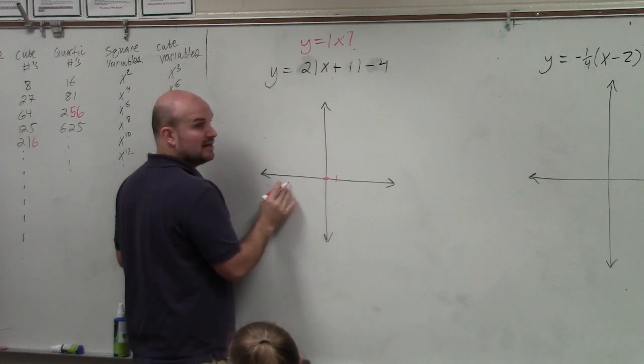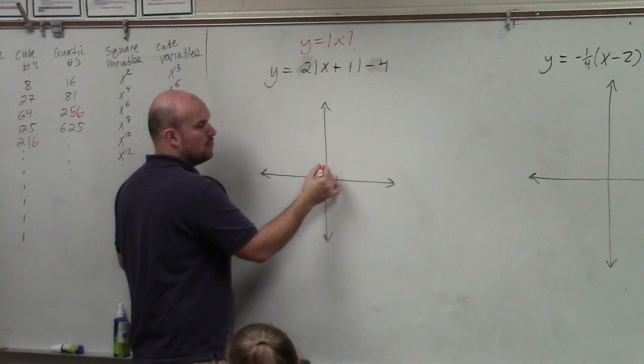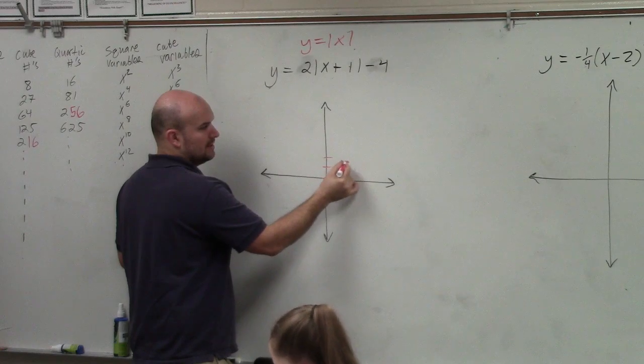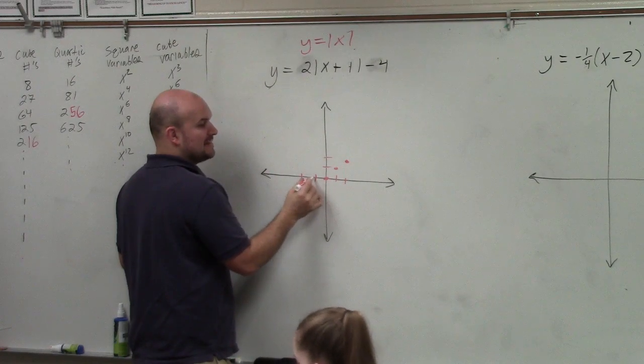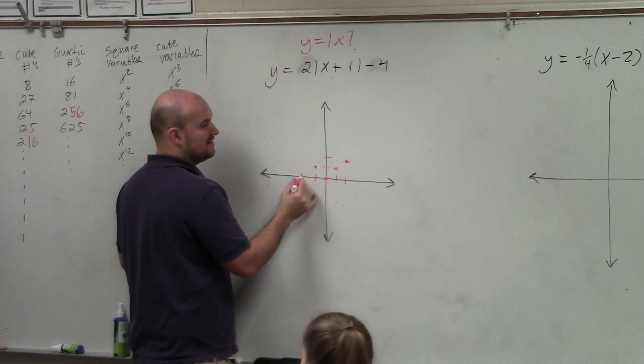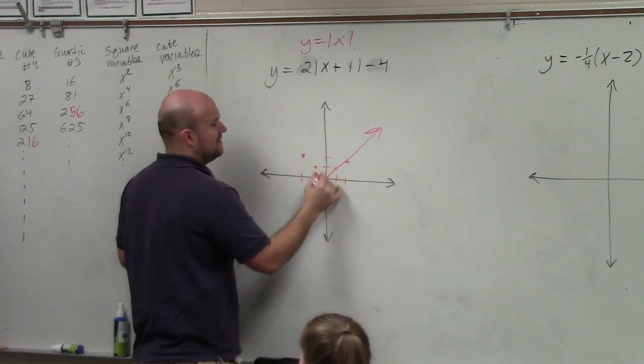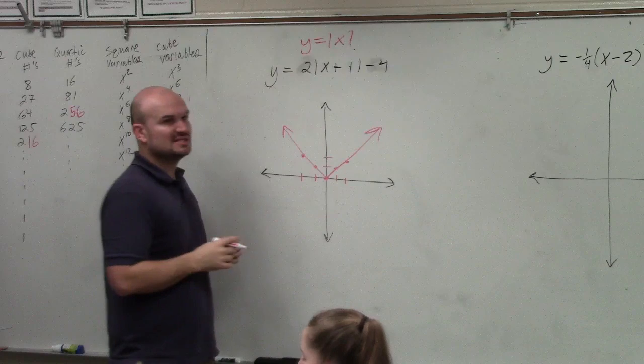Because if you were to plug in numbers, absolute value of 1 is 1, absolute value of 2 is 2. And that was the same for the negative numbers. Absolute value of negative 1 is 1, absolute value of negative 2 is 2. So the graph looked like a v, hence called the v-graph.